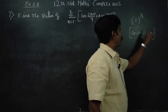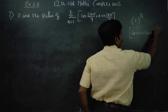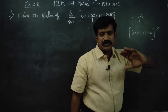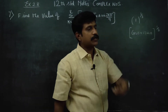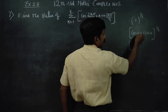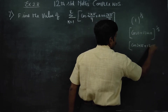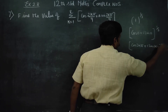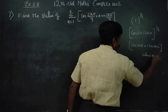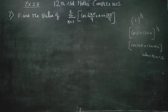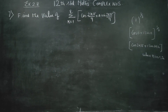Now, cos 0 plus i sine 0, whole power one-third — how to find the nth root of unity or the nth root of a complex number? You have to add 2kπ to the argument. Adding 2kπ gives us cos(2kπ) plus i sine(2kπ), where k is equal to 0, 1, 2. I am focusing on cube root of a complex number.